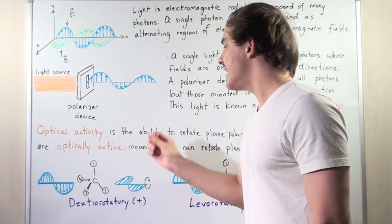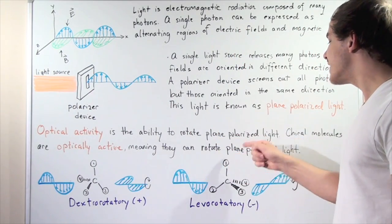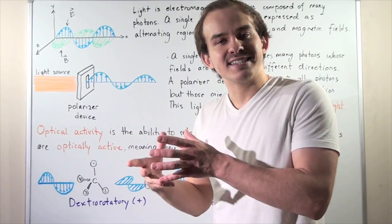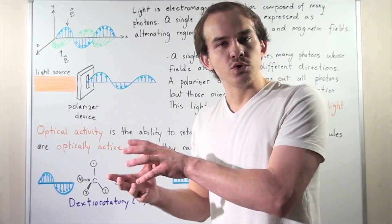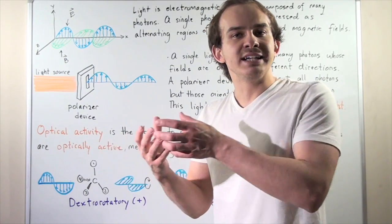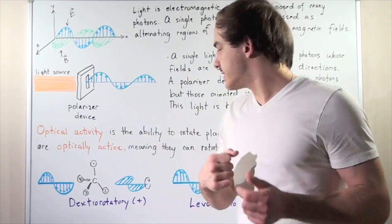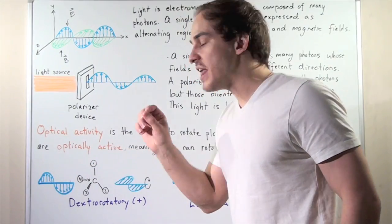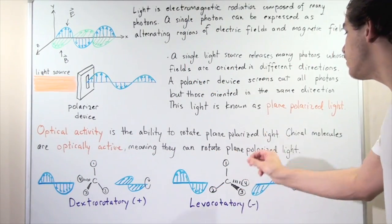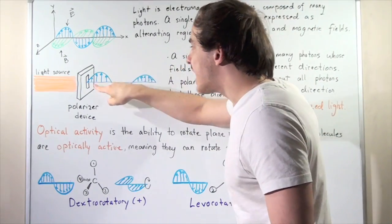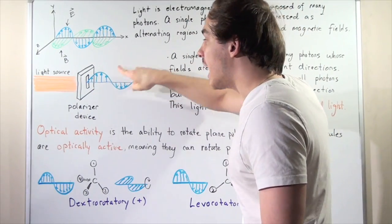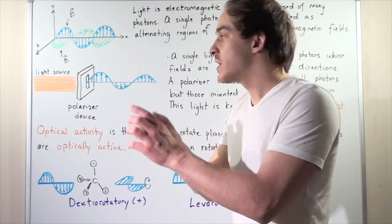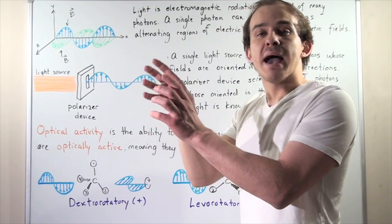Optical activity is the ability to rotate plane polarized light. There are certain molecules or compounds that, when you shine light on them, reflect and rotate that light. Chiral molecules are optically active, meaning they rotate plane polarized light. So if you take polarized light and shine it on a chiral molecule, that molecule will rotate that light a certain number of degrees.